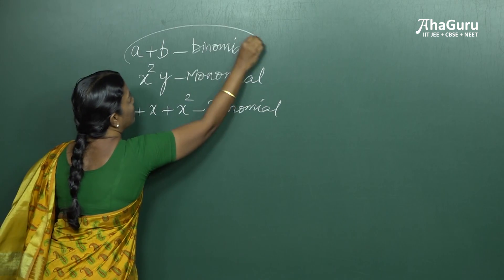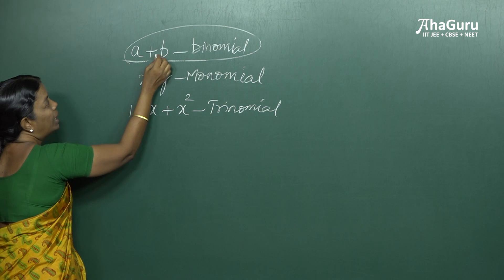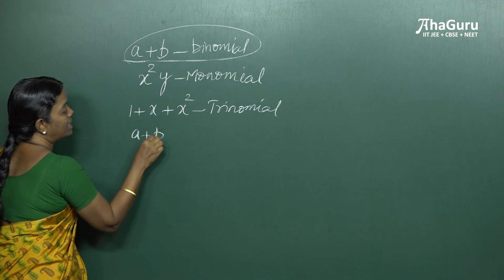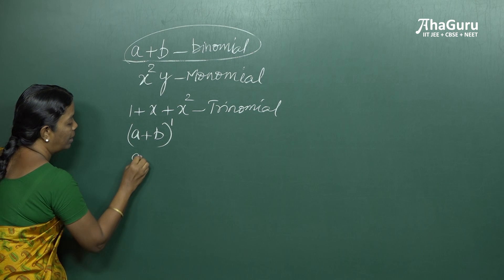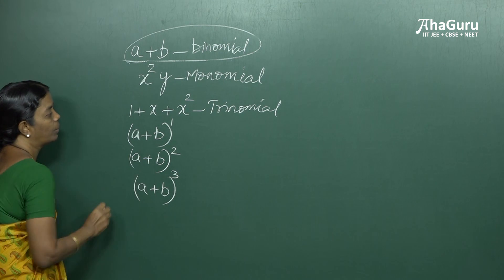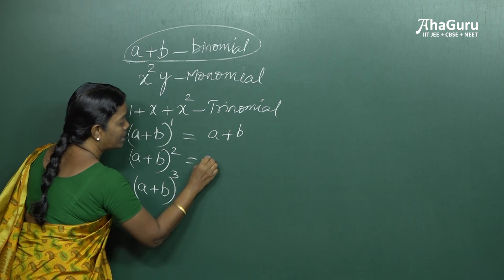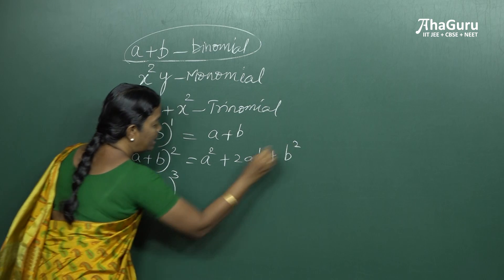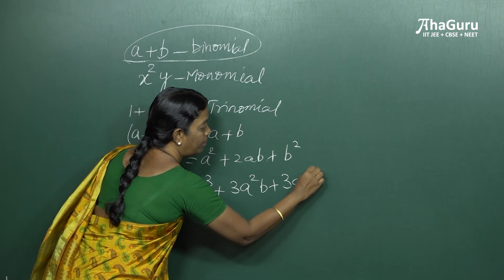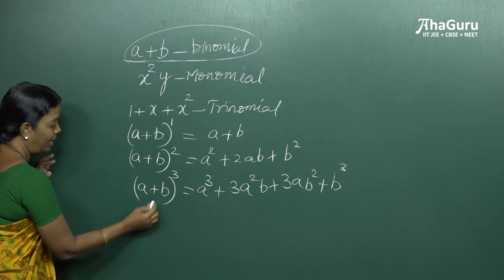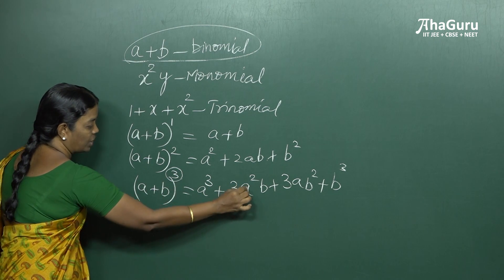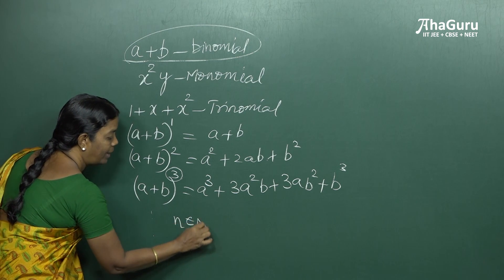Now we're going to consider this binomial and raise it to a natural power. Consider a plus b raised to the power 1, a plus b whole squared, and a plus b whole cubed. These expand to: a plus b; a squared plus 2ab plus b squared; and a cubed plus 3a squared b plus 3ab squared plus b cubed. For higher powers, we want to find what the general expansion looks like when raised to a natural number n.